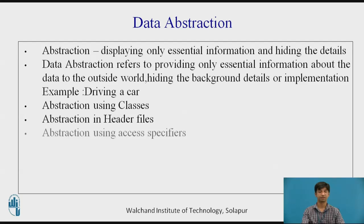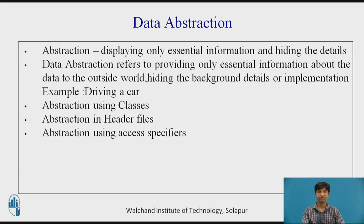Abstraction using access specifiers: access specifiers are the main pillar of implementing abstraction in C++. We can use access specifiers to enforce restrictions on class members. Members declared as public in a class can be accessed from anywhere in the program. Members declared as private in a class can be accessed only from within the class and are not allowed to be accessed from outside. The members that define the internal implementation can be marked as private, and the important information needed by the outside world can be marked as public. These public members can access the private members as they are inside the class.